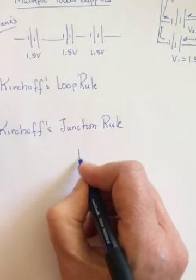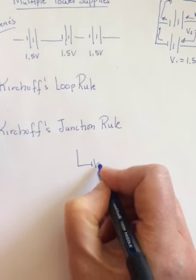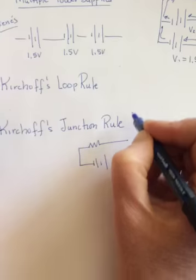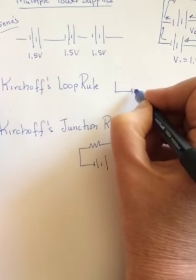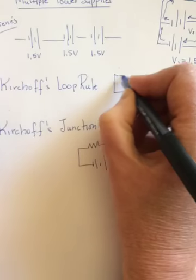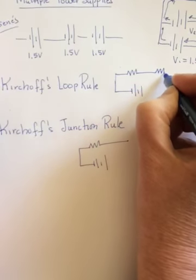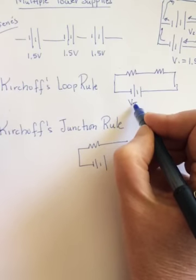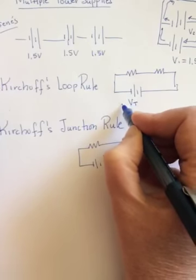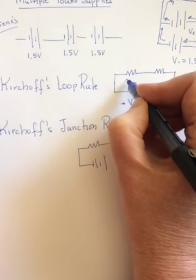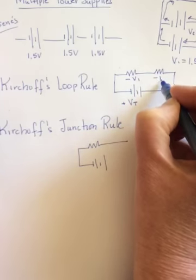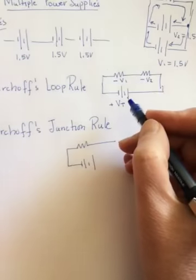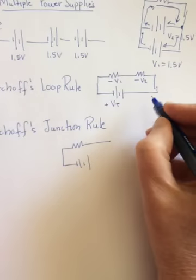We've actually been using both of these all along. The junction rule says, no, excuse me, it's the loop rule. That's why I should have wrote it first. The loop rule says, as you go around the loop and you count the voltage that a power supply is putting in as positive and you count the voltage that the resistors are taking out as negative. As you go around the loop,